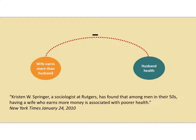This is a piece of empirical evidence — a correlation between two variables. This drawing represents that empirical evidence. The unit of analysis, the who or what the variables are about, is men in their 50s. This is the health of the husband, and this is whether his wife earns more than he does. The dotted line shows there's a correlation between those variables, and the negative sign shows it's a negative relationship: wife earning more than her husband means the husband's health is lower.